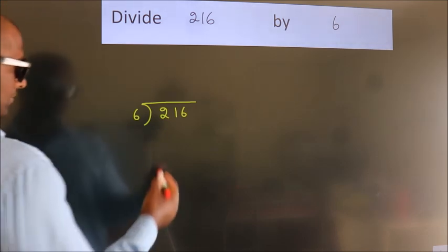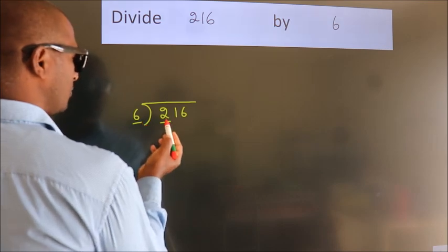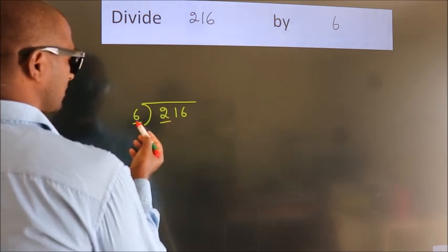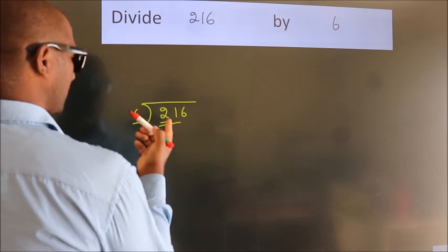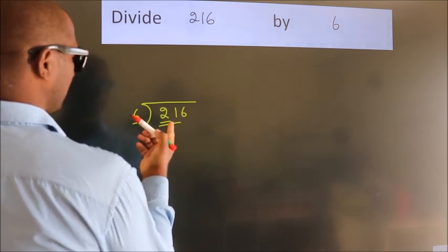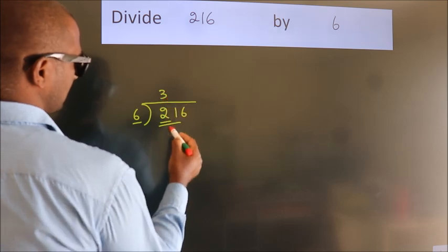Next. Here we have 2. Here 6. 2 smaller than 6. So, we should take 2 numbers. 21. A number close to 21 in the 6 table is 6 threes, 18.